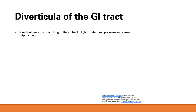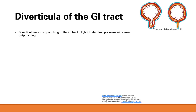Starting with pathology of the GI tract, we're going to start with diverticula. A diverticulum in general is an outpouching of the GI tract, and it can be caused by high intraluminal pressure. There are all these layers of the gut wall: the mucosa, submucosa, muscularis externa, and then serosa/adventitia. Normally it's a nice little circle, but here you get a little outpouching.